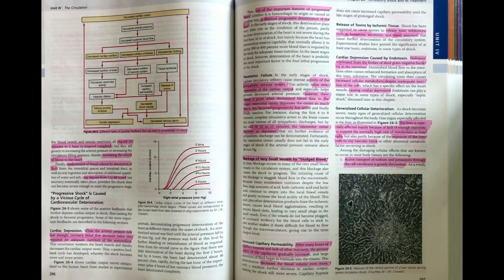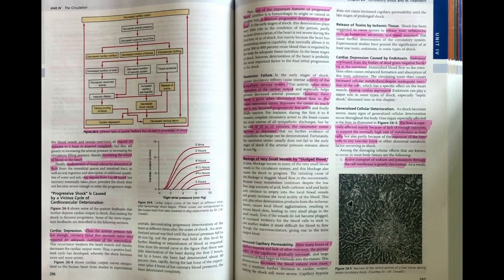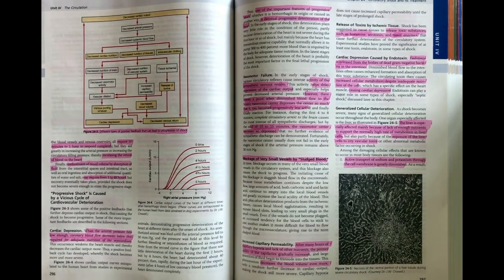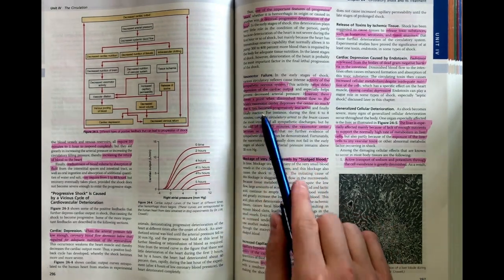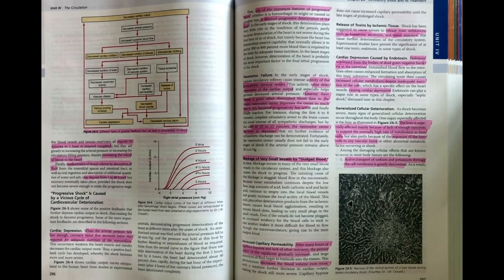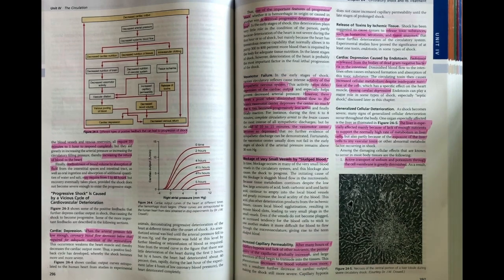We can touch on a couple of these factors now. Vasomotor failure—reduced blood flow to the actual vasomotor center in the brain results in peripheral vasodilation as the vasomotor center becomes depressed, reducing our venous return.